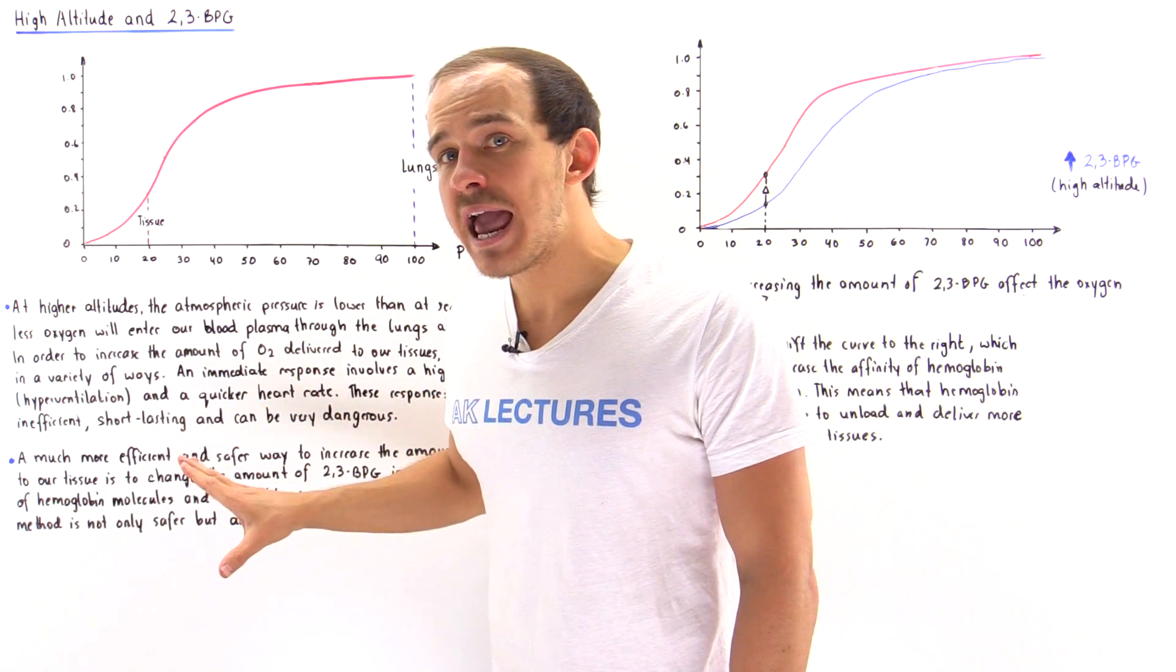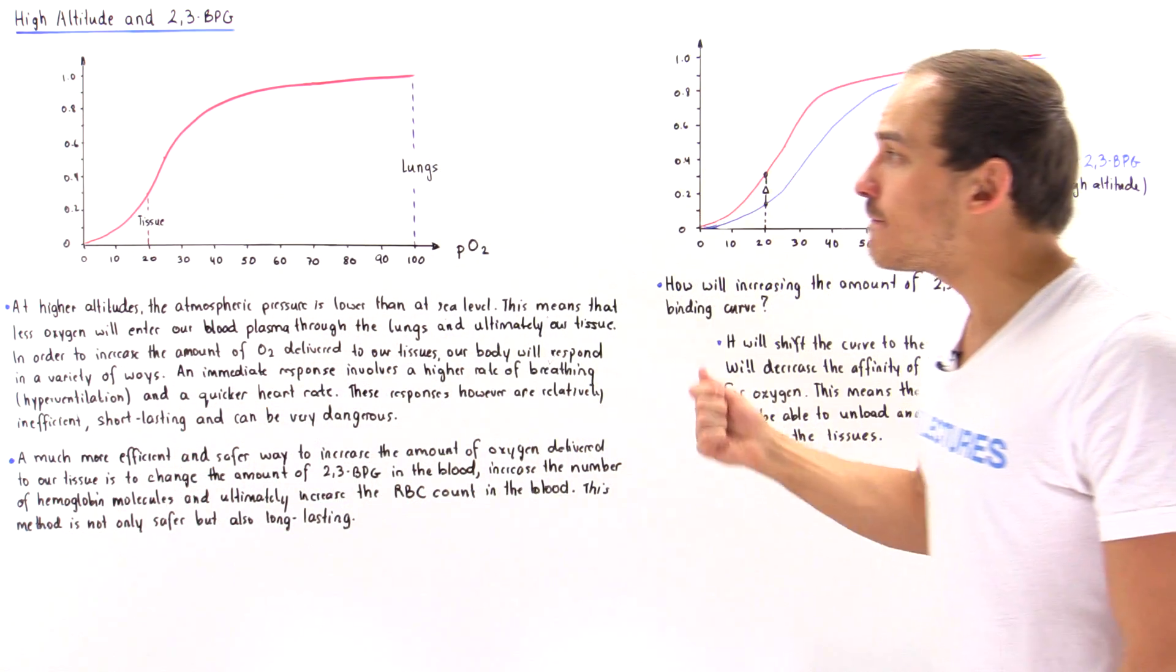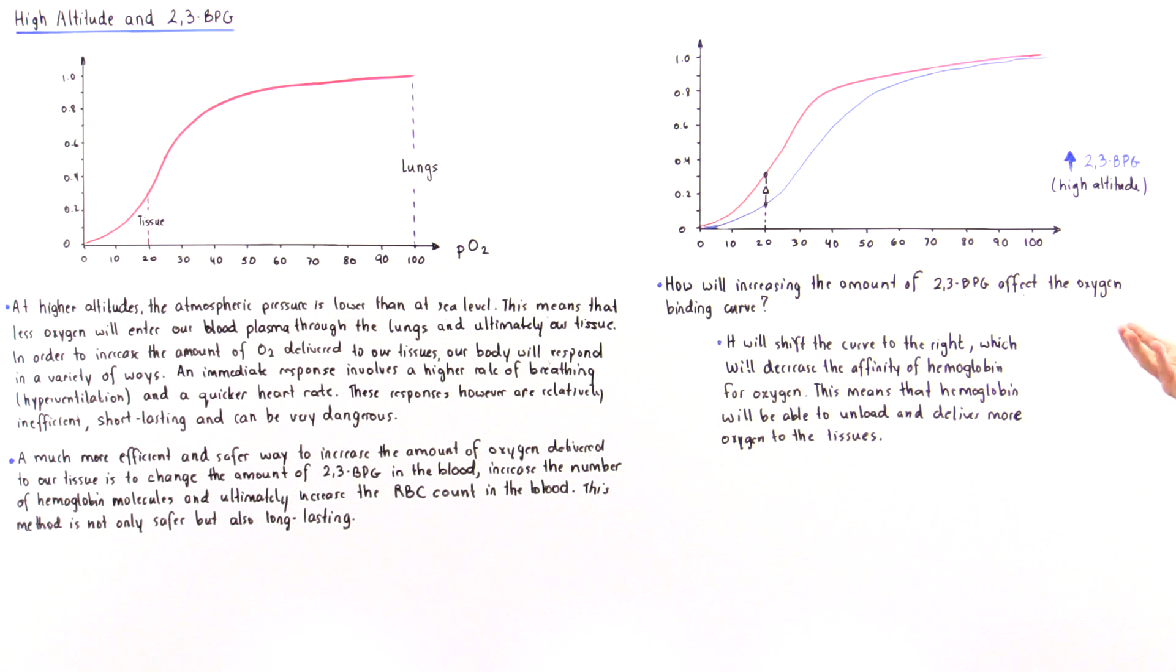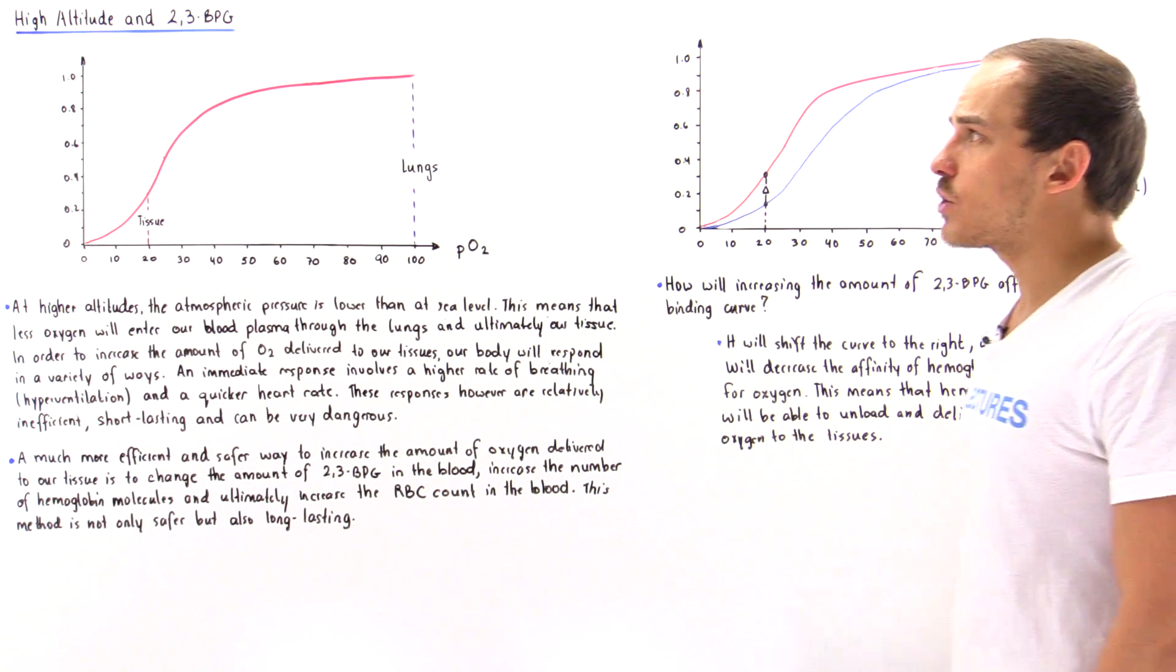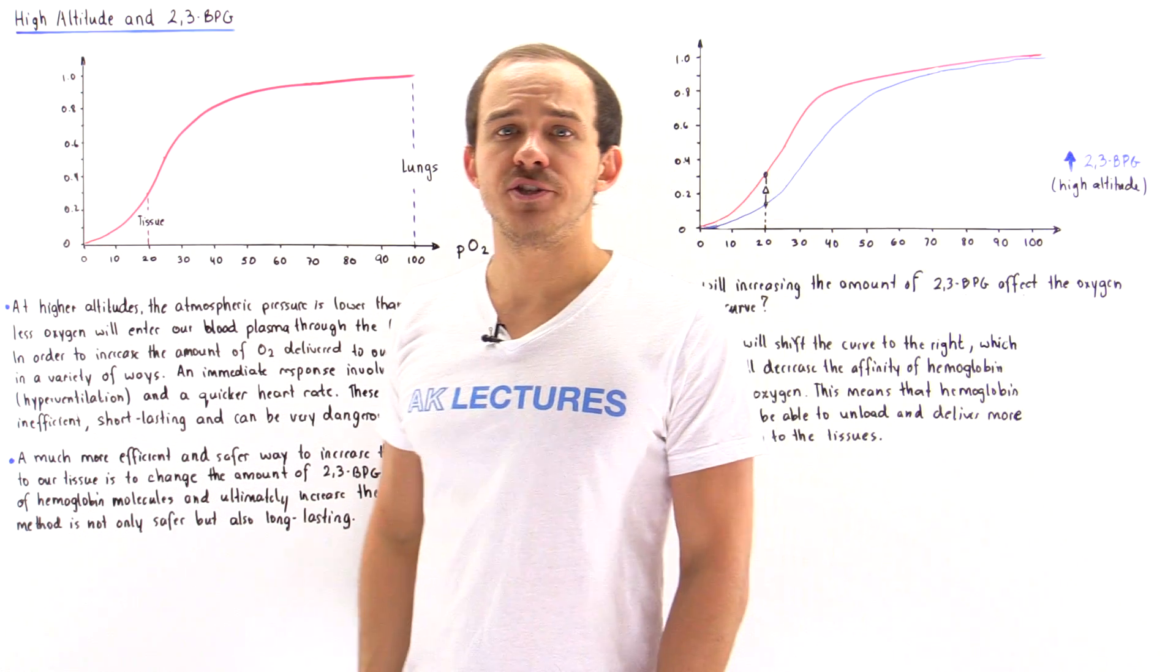We want to keep that rate the same, and to do that, we have to affect hemoglobin in other ways. The way that we affect it is by increasing the concentration of 2,3-BPG.